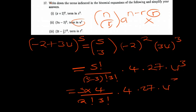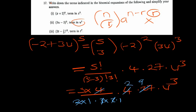Now expanding 5 choose 3 using factorials: 5 factorial over 2 factorial times 3 factorial. 2 factorial is 2 times 1, and 3 factorial is 3 times 2 times 1. Simplifying: we get 10. Then 10 times 4 is 40, and 40... let me check: 3 into 27 is 9, 9 times 2 is 18, 18 times 10 is 180. So this simplifies to 180u to the power 3.